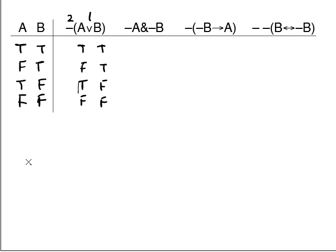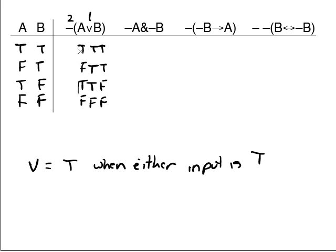When is a wedge statement true? A wedge is true when either input is true. Wedge equals true when either input is true. Because when is an or statement true? When at least one of the components is true. So, true wedge true gets us true. False wedge true is also true. True wedge false, true. False wedge false is false.